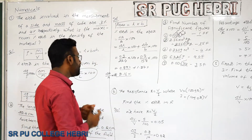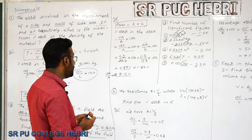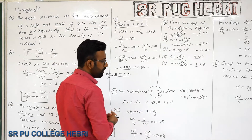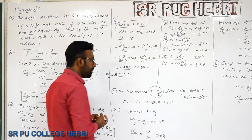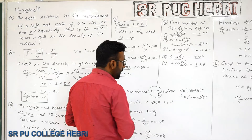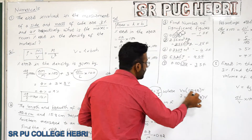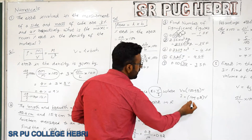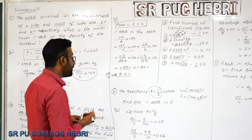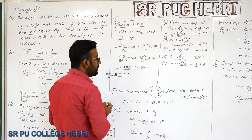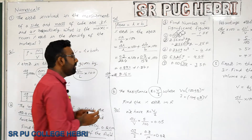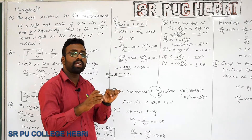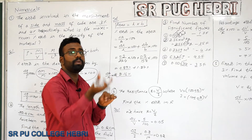Moving to the next problem on percentage error — this is a solved problem from the textbook. Resistance R = V/I. The values given are V = 100 ± 5 and I = 10 ± 0.2, where 5 and 0.2 are the errors. We need to find the percentage error in R.